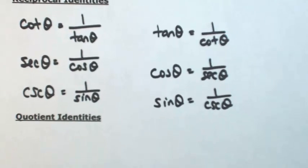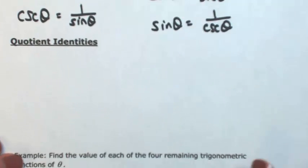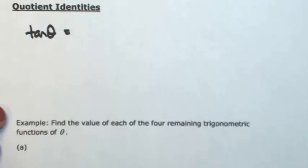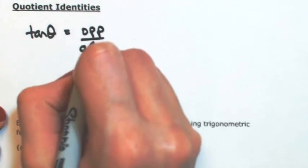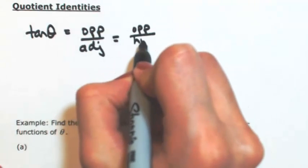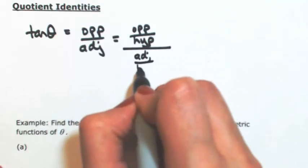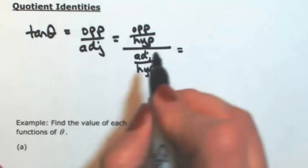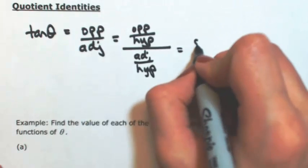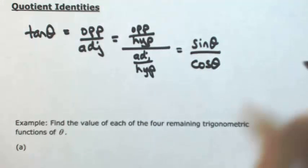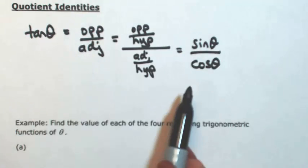Let's look at the next ones called the quotient identities. We'll start with the tangent of theta. Within a right triangle, we've defined this as the opposite over the adjacent. What I'm going to do is divide the top and bottom by the hypotenuse, so we would have opposite over hypotenuse divided by adjacent over hypotenuse. This is equivalent because we're dividing top and bottom by the same thing. Opposite over hypotenuse is the sine of the angle, and adjacent over hypotenuse is the cosine of the angle. So this is the quotient identity for tangent: tangent of theta equals sine of theta over cosine of theta.